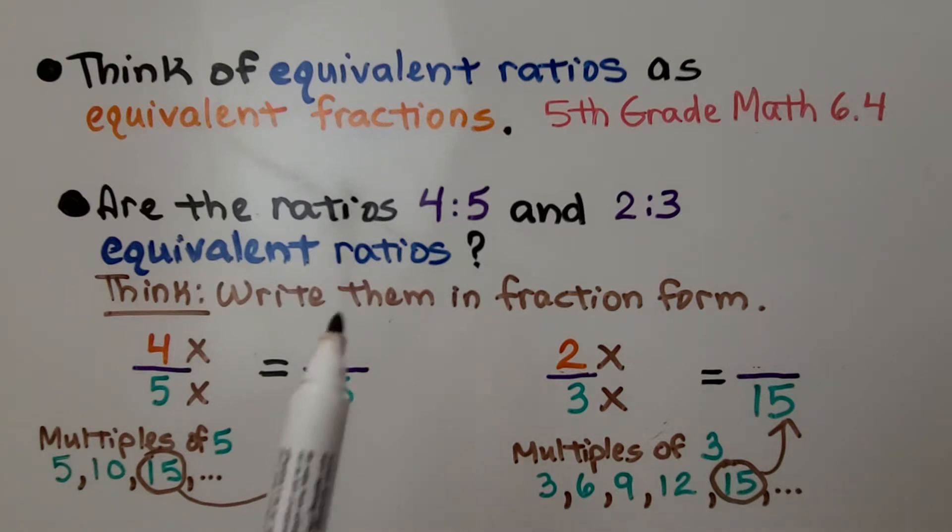Are the ratios 4 to 5 and 2 to 3 equivalent ratios? Let me think. We write them in fraction form, 4 to 5, 2 to 3, and we write their multiples.